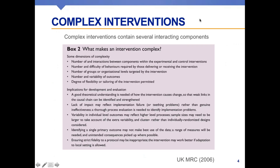When systematic reviews were first used in medicine, they were often used to synthesize information on the effects of drug interventions, where although there was still complexity, the interventions were relatively straightforward — you just had to define the drug, maybe the dose and route. However, as time has advanced, we're now using systematic review approaches to synthesize evidence on very complex health system and public health interventions, and these usually involve several interacting components.